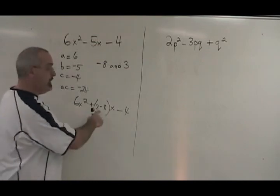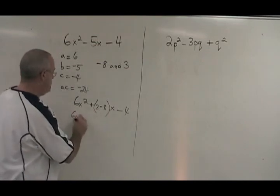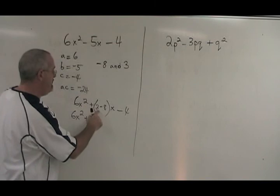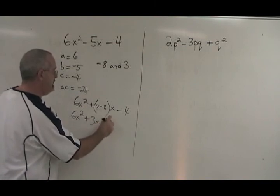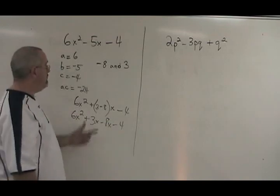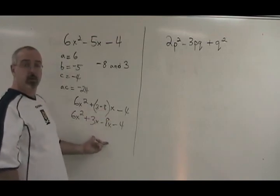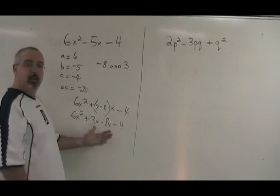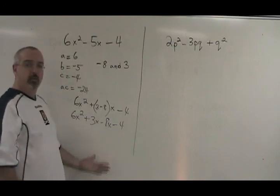The next thing is to break this bracket up. We have 6x squared plus 3x minus 8x minus 4. And what we have done is we have converted our trinomial into a grouping, a four-term grouping. So we proceed with what we have learned in the grouping method for the rest of the way.